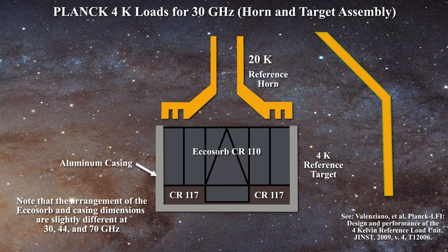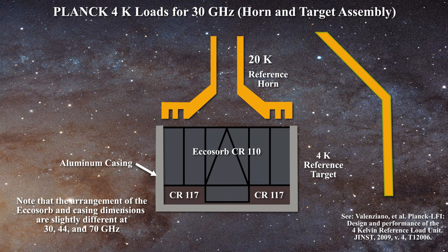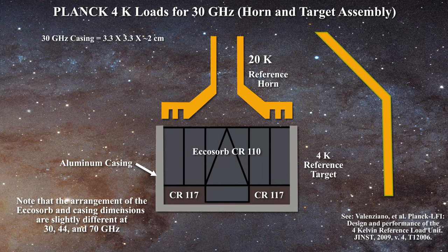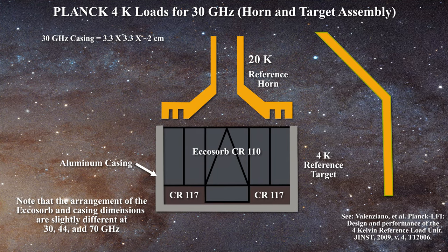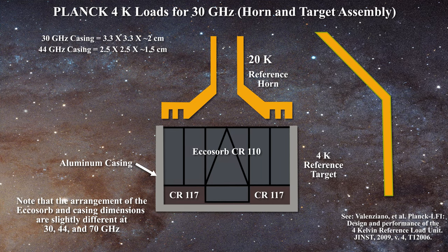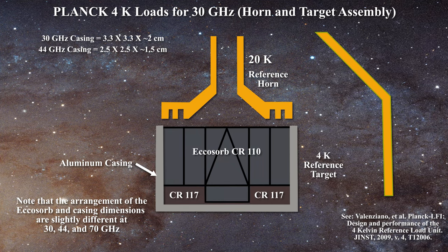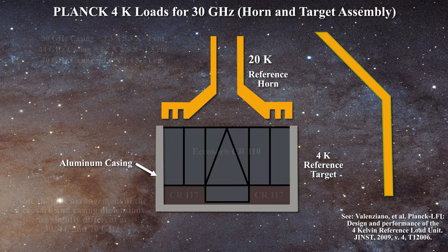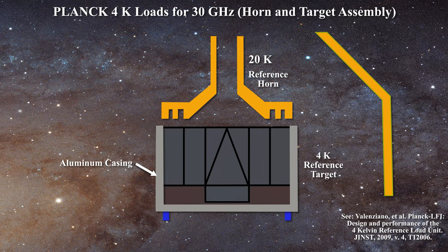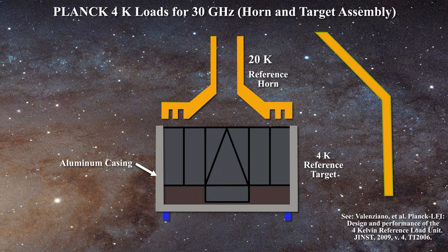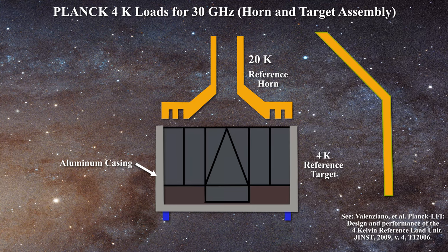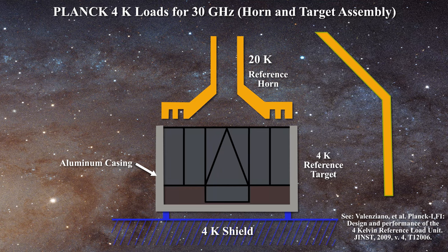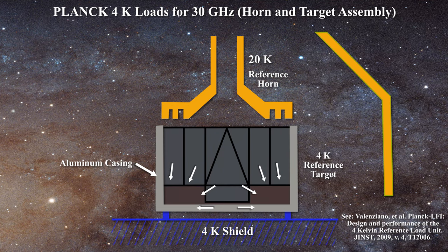A different size aluminum casing is employed at each frequency. At 30 GHz, the casing has dimensions of 3.3 by 3.3 by about 2 centimeters. At 44 GHz, it is 2.5 by 2.5 by 1.5 centimeters. At 70 GHz, it is 1.6 by 1.4 by 1 centimeter. The third and final part of the assembly is comprised of conductive steel washers and anchoring screws which provide a conductive heat path into the 4K shield of the satellite. These act to ensure that the reference loads remain at 4K by channeling heat out of these devices.